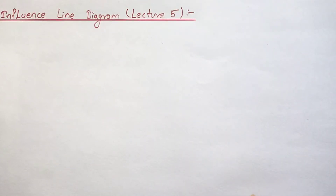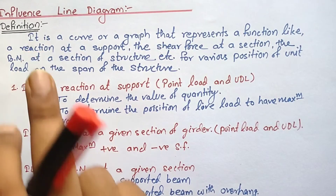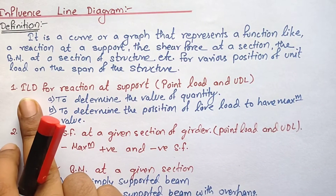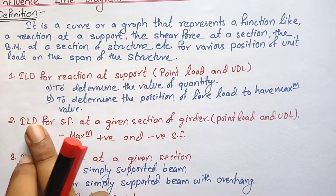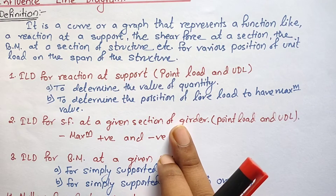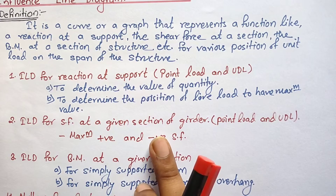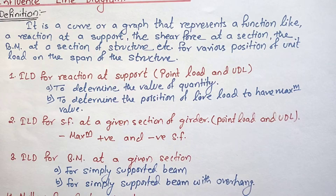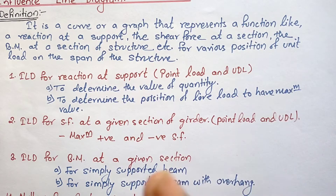Welcome back to Civil Learning Online. We've been studying influence line diagrams — their meaning, usage, and how to calculate ordinates for reactions at supports and shear force at a given section. Today in Lecture 5 we will learn how to calculate the maximum positive and maximum negative shear force for a given span of a girder. If you haven't watched the previous videos, the links are in the description.